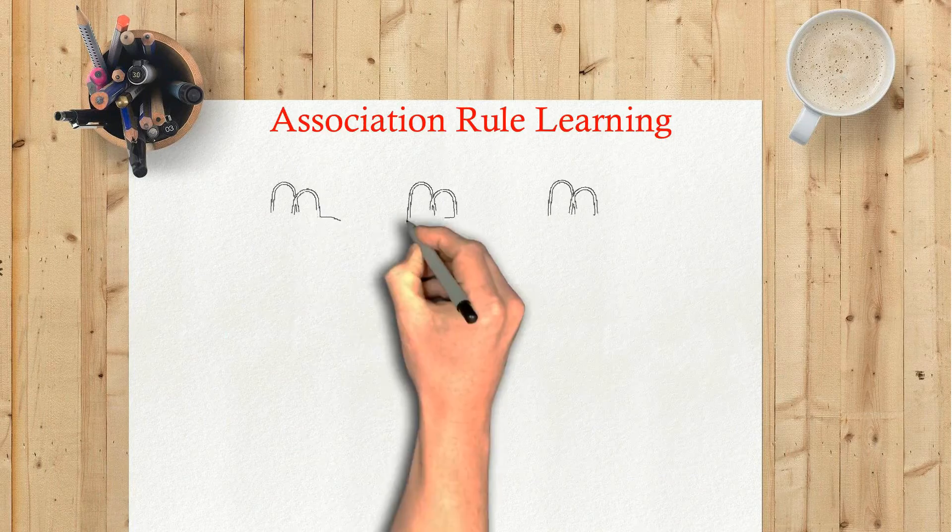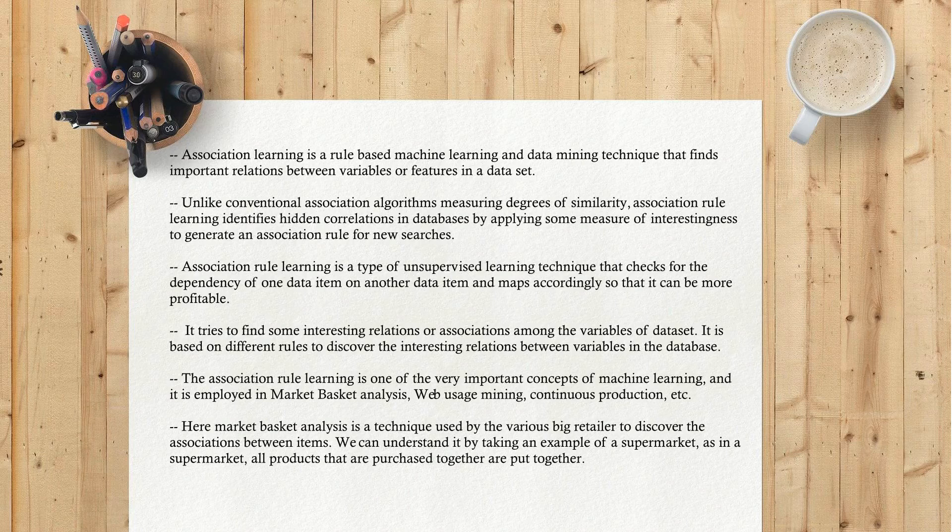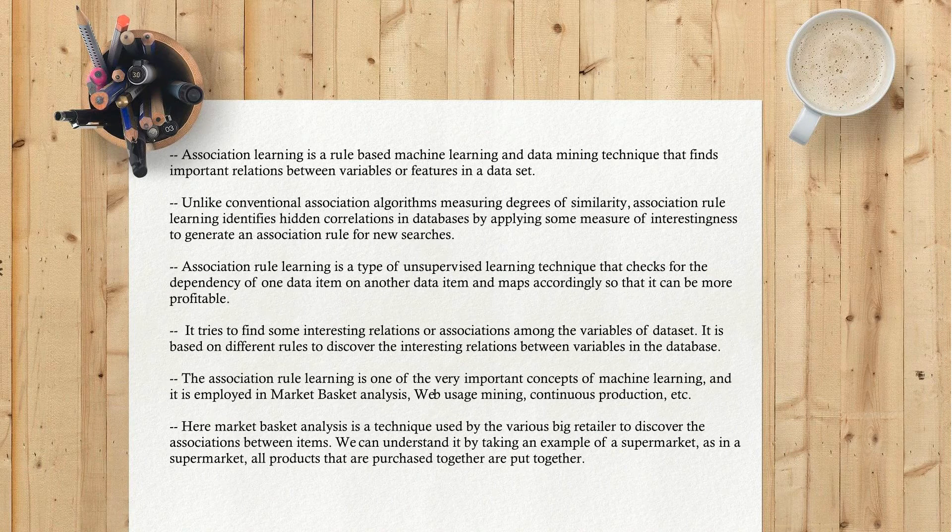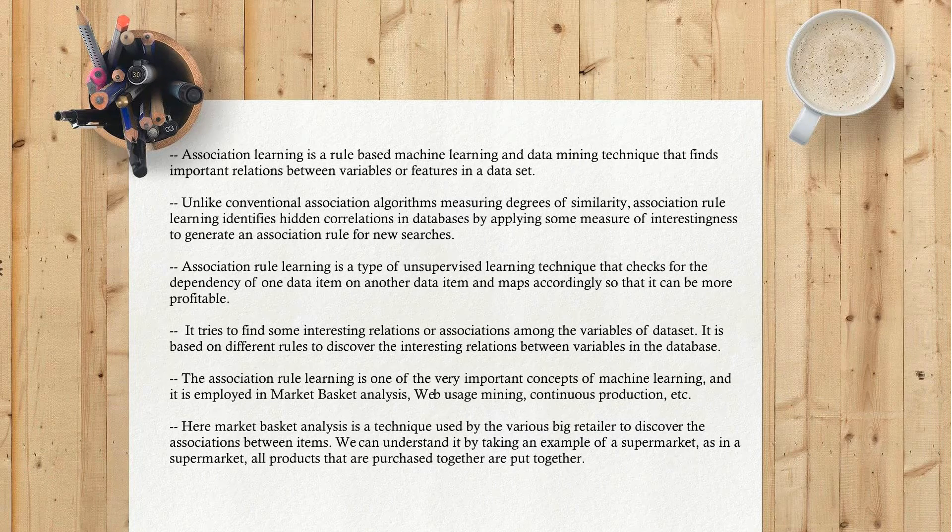Association rule learning is a rule-based machine learning and data mining technique that finds important relations between variables or features in a dataset.